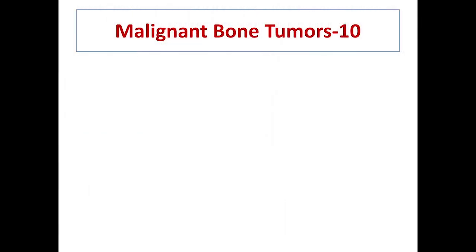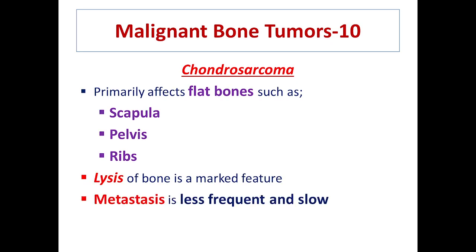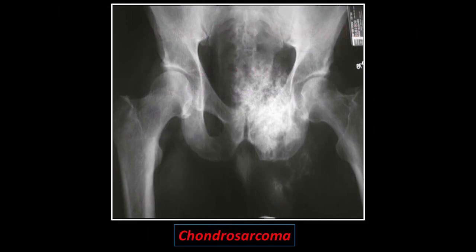Chondrosarcoma primarily affects flat bones such as the scapula, pelvis, and ribs. Lysis of the bone is a marked feature, and metastasis in such cases is very slow and less frequent. This is a clear case in which you can see the lytic changes.